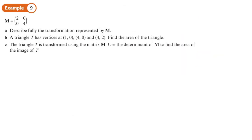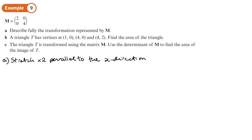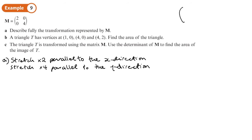So here we want to fully describe the transformation represented by M. The 2 represents a stretch times 2 parallel to the x direction, and the 4 represents a stretch times 4 parallel to the y direction. We just compare it to the known matrix form (A, 0; 0, B).